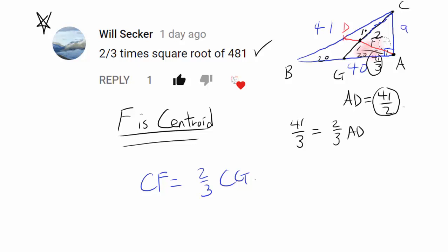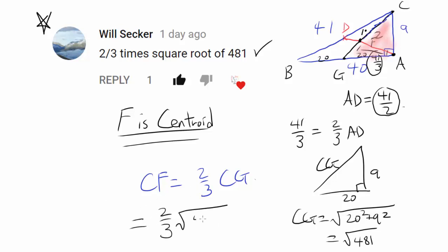And to find CG, we can focus on this right triangle. And we have the length 20 and we have CG. And that's telling us CG is equal to square root of 20 squared plus 9 squared, also known as square root of 481. So our final answer is 2 thirds times square root of 481.